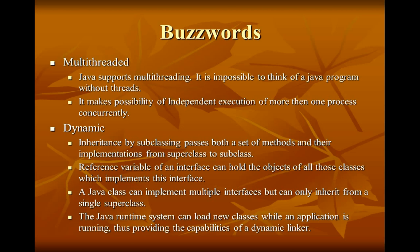The multi-threading concept enables the independent execution of more than one tiny process concurrently. Java is also dynamic. Inheritance by subclassing passes both a set of methods and their implementation from a superclass to a subclass. A reference variable of an interface can hold the object of all those classes which implement that interface. At runtime, it will be decided which method on which object has to be executed — this feature makes it dynamic.